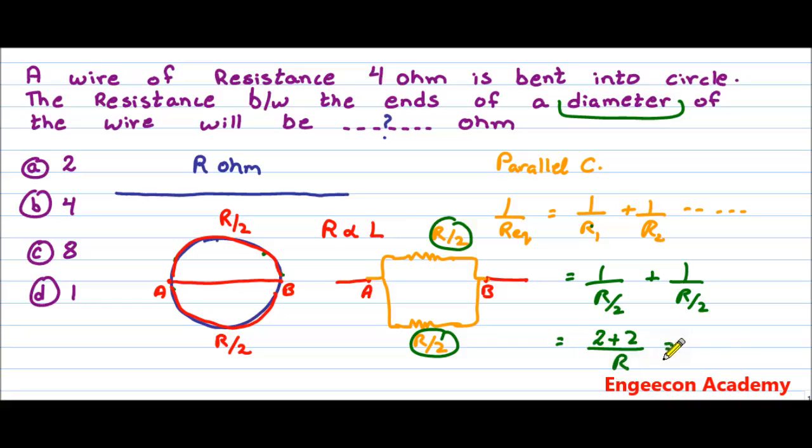Which can be written as 4 divided by R. So when we take the reciprocal to get the equivalent resistance, the equation we have is R_equivalent equals R divided by 4.